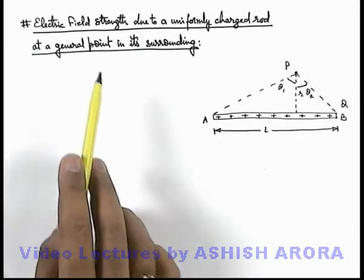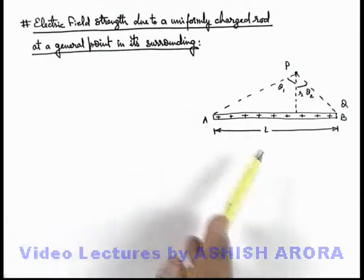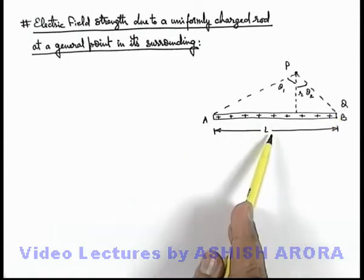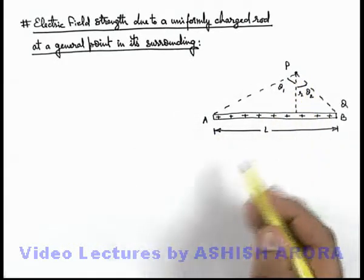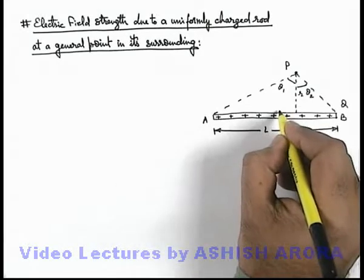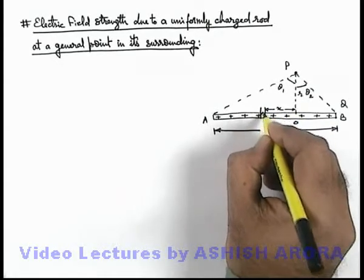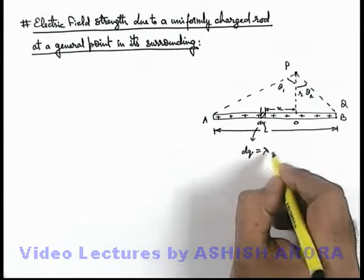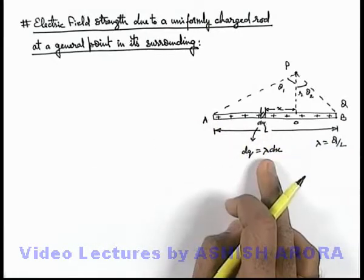Let's discuss the electric field strength due to a uniformly charged rod at a general point in its surrounding. As we can see in the figure, there is a uniformly charged rod AB with total charge q and length l. We are required to find the electric field strength at point P due to this rod, following the same procedure taken up in previous articles. At a distance x from point O, we consider a small element of width dx. Its charge dq will be lambda·dx, where lambda equals q divided by l — the linear charge density of the rod.